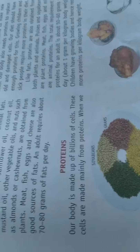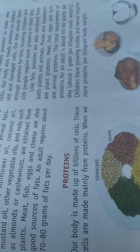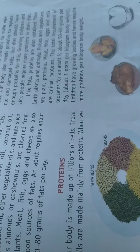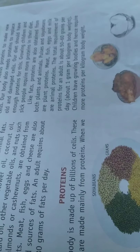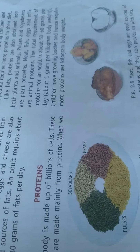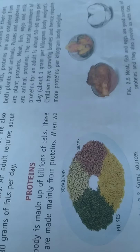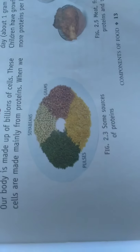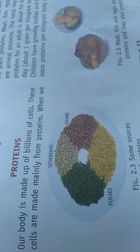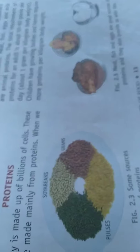Meat, fish, eggs and milk are animal proteins. The total requirement of protein for an adult is about 50 to 60 grams per day. Children have growing bodies and hence require more proteins per kilogram body weight. The sources of plant proteins include pulses, grams and soybeans.